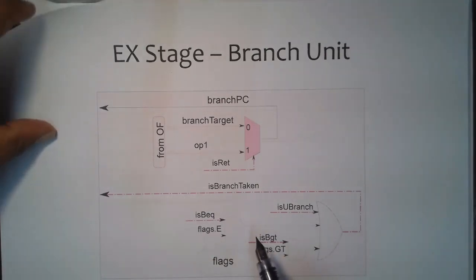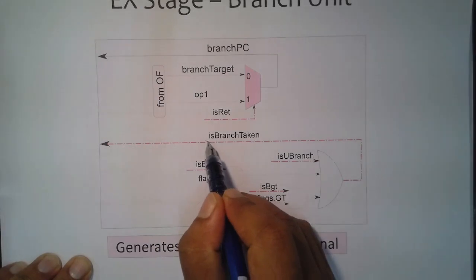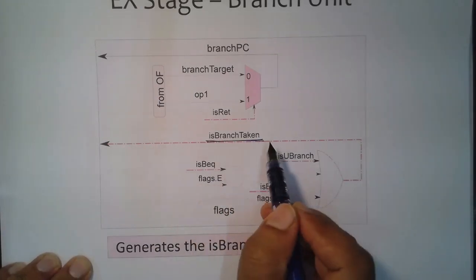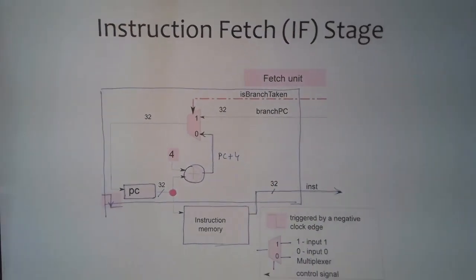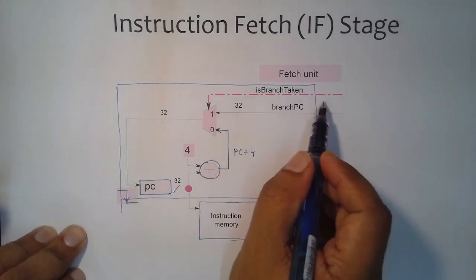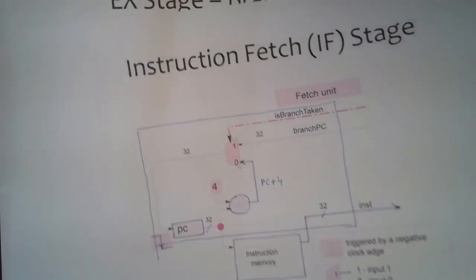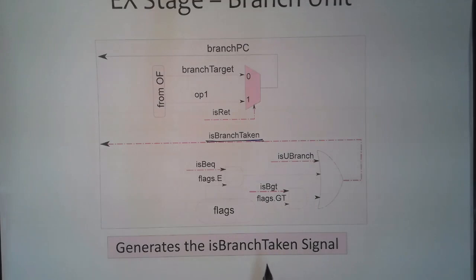In the execution unit we need to generate the 'is branch taken' signal. Recall that in the instruction fetch unit there is an input control signal called 'is branch taken.' The control unit generates that signal, but to generate it you need certain flags, because for a conditional branch those comparisons are done in the execution unit.